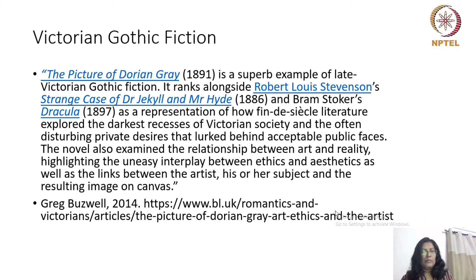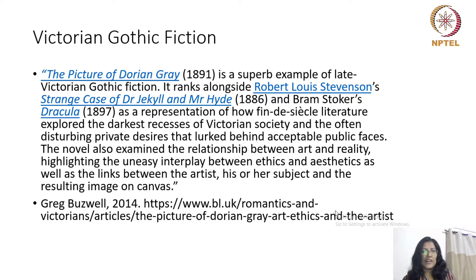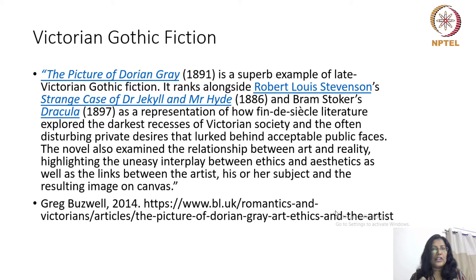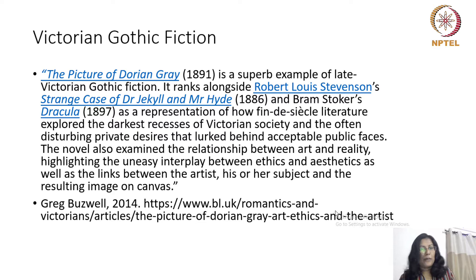The Picture of Dorian Gray belongs to the category of Victorian Gothic fiction. The Victorian Gothic is a mode that was very popular during the turn of the century. At the end of the 19th century, there was an exploration of the dark desires of society in textual narrative and other kinds of narratives. The Gothic mode was a useful way to explore the anxieties and private desires of individuals hidden behind acceptable public faces. The public face was different from the private self, and individuals in society increasingly came to recognize that disconnect, that disjunction.